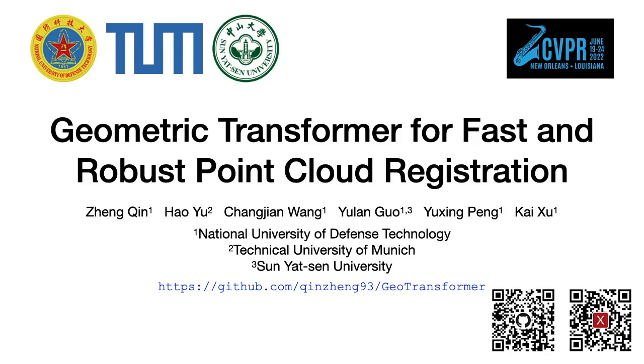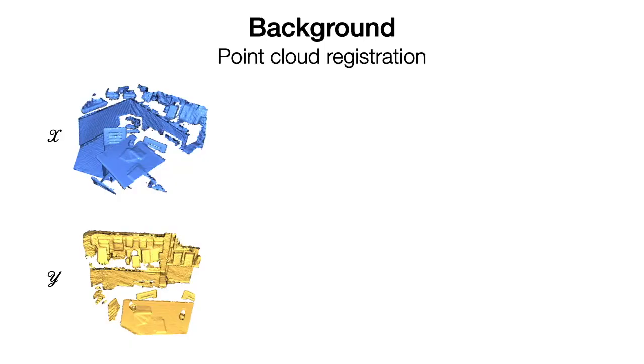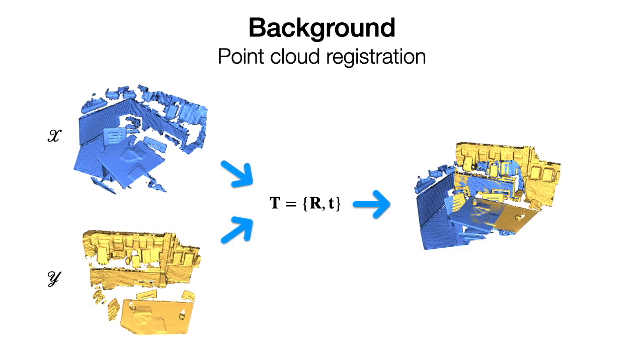We present Geometric Transformer for Fast and Robust Point Cloud Registration. Given two partially overlapping point clouds in arbitrary poses, point cloud registration aims to recover the rigid transformation aligning them.